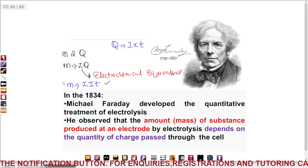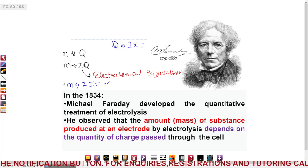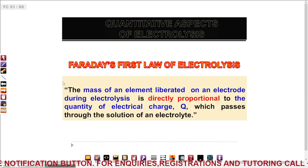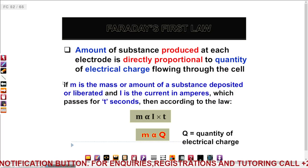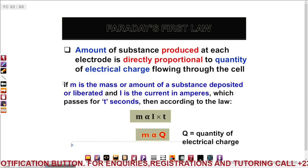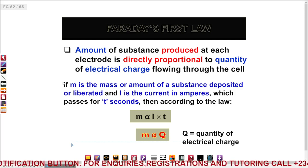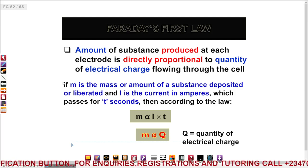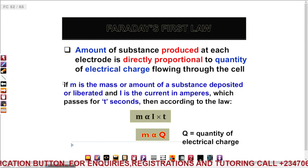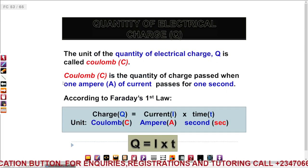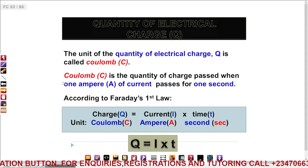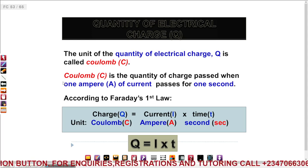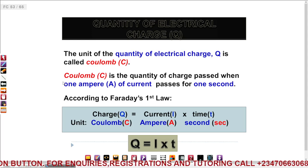So the language form: mass deposited or liberated is directly proportional to the quantity of electricity that is passed. The mathematical interpretation is: M is proportional to Q, and Q equals I times T, so M is also proportional to I and T — all parameters have their usual meaning. Quantity of electricity is measured in coulombs, current is measured in amperes, and time is measured in seconds. Every parameter stands with those units, which you have to keep at the back of your mind.